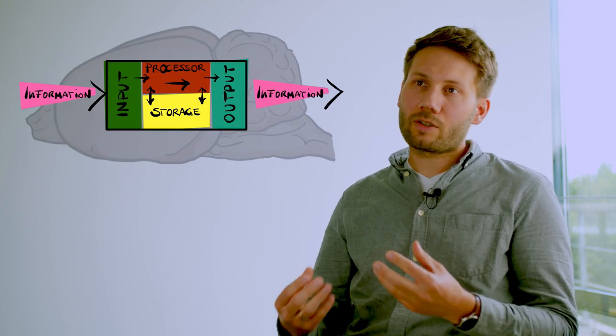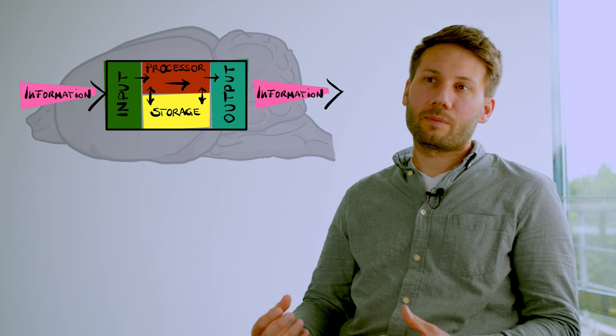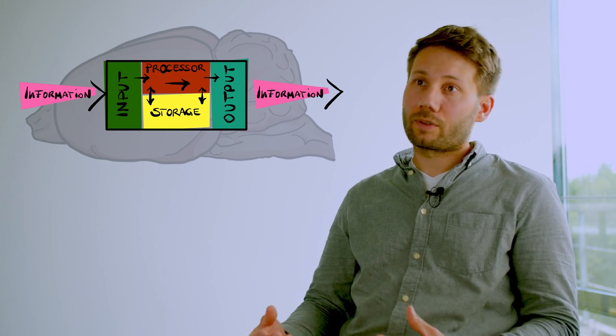For example, animal brains can teach us principles of information processing that have been optimized over millions of years during evolution.